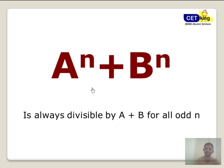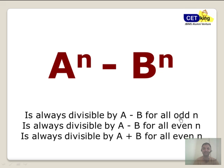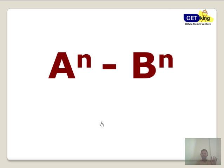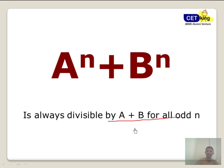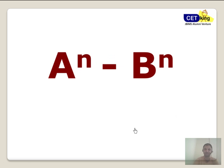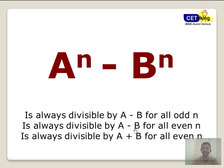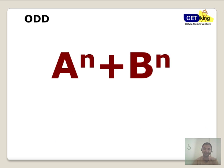So a^n + b^n is always divisible by a + b for all odd values of n. And a^n - b^n is always divisible by a - b if it is odd. If it is a plus value, it's always divisible for odd. If it is minus, then it's always divisible by a - b if it is odd. There are four different formulas. Now let's use common sense when it comes to odd and even.